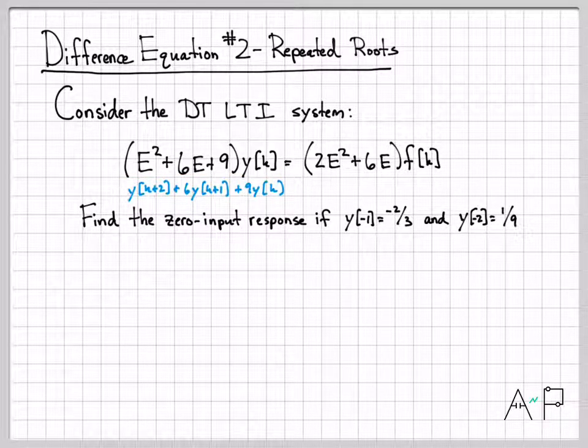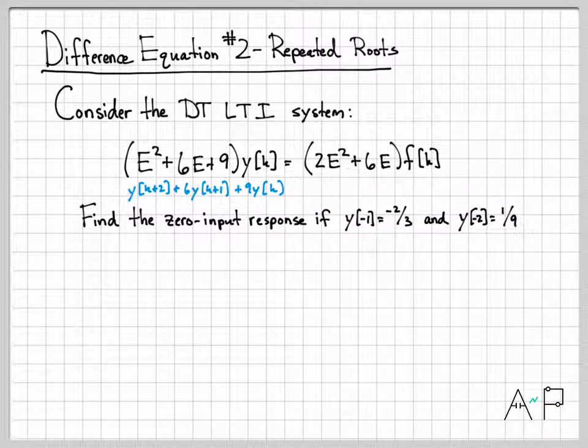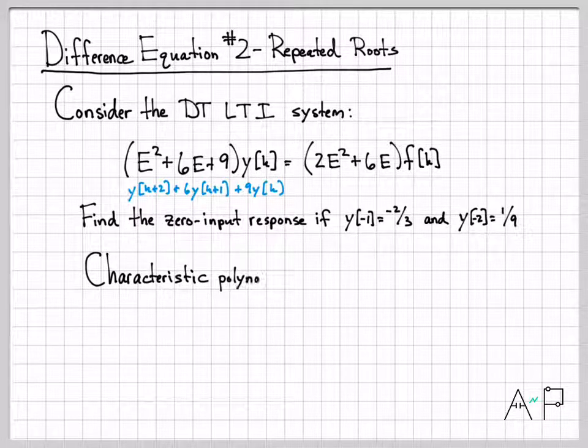We're going to go ahead and start solving for the zero input response. Just refresh - remember the zero input response is due only to initial conditions, so we have to know some initial conditions for the system. Otherwise the system at rest with no initial conditions will just have an output of zero for all time, which is pretty boring. For this particular problem our initial conditions are these values right here - at time minus one the output was equal to minus 2/3, and at time minus two the output was equal to 1/9.